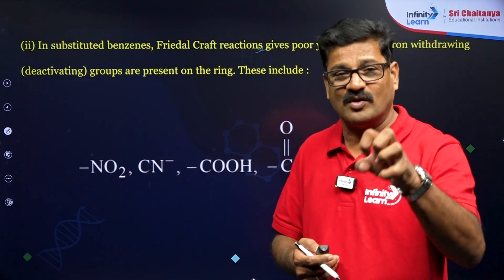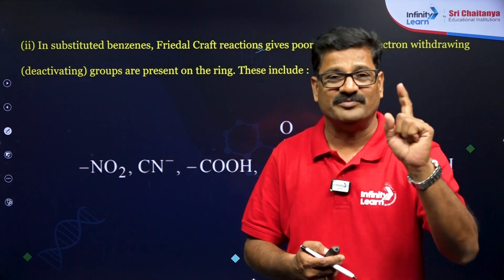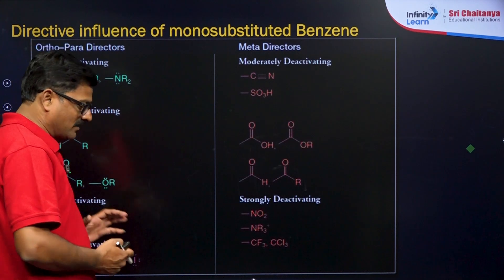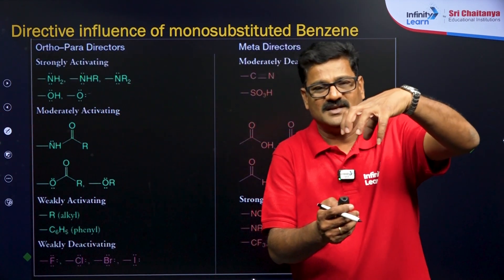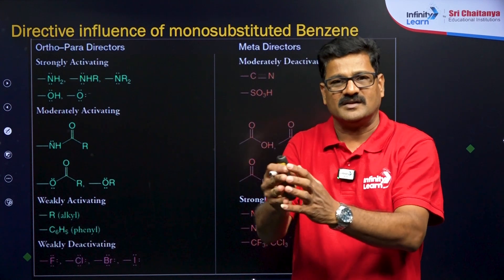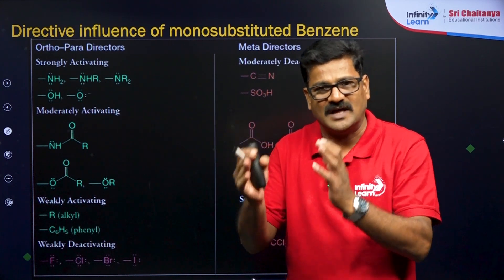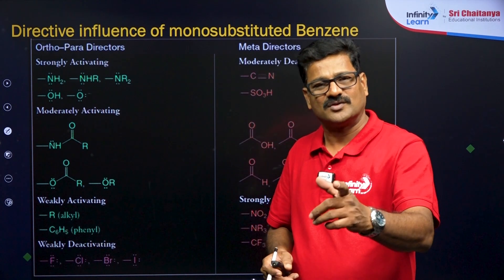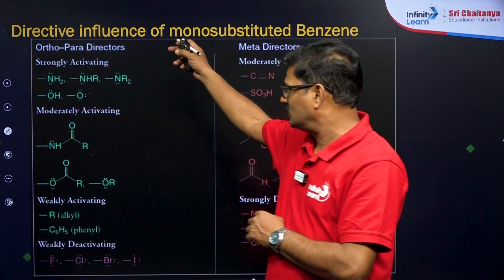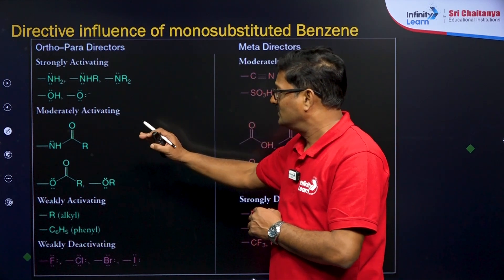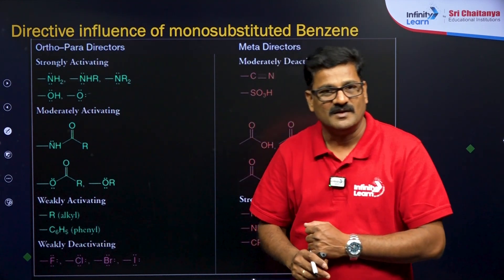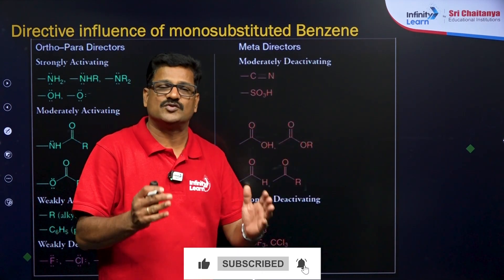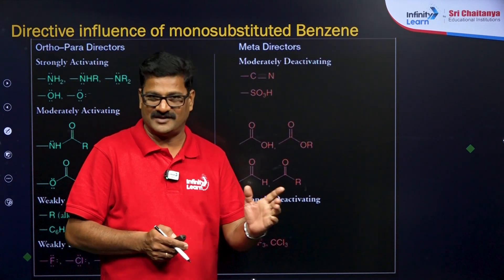Regarding the direct influences on the benzene ring: whenever a group attached to benzene has a positive mesomeric effect, the ring is activated. In that case, electrophilic aromatic substitution gives ortho and para directing groups. These groups can be strongly activating, moderately activating, or weakly activating. Whenever the group has a negative mesomeric effect, it is a meta-director and the ring is deactivated.